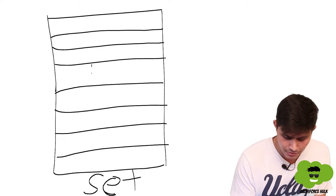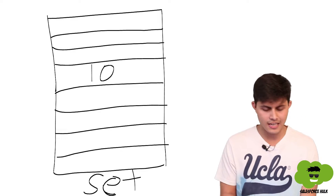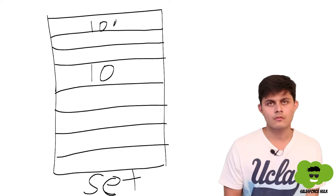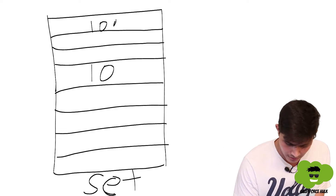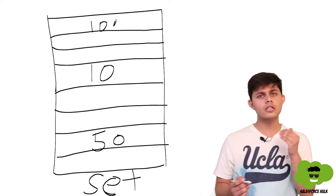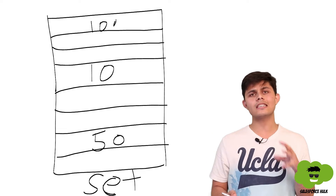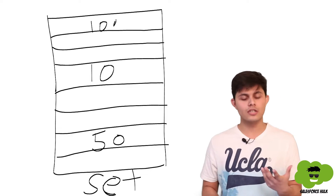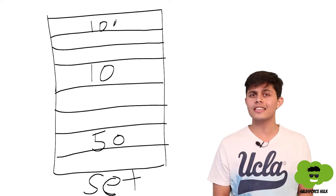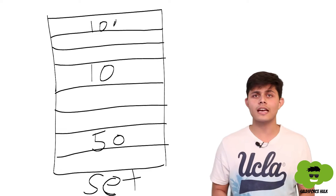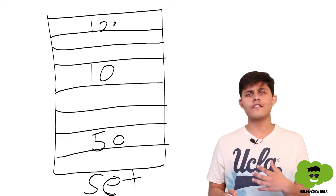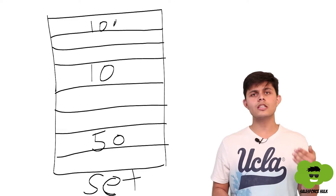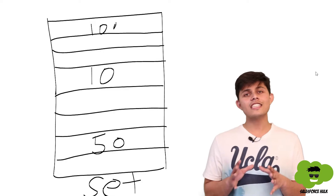If you store 10 into a set, it can be stored anywhere — literally anywhere. Then 100 can be stored somewhere else, and 50 can be stored anywhere too. The information stored in a Set is in an unordered format and is unique. So if you have already stored 50 and you try to store 50 again, that duplicate 50 will not be stored because a Set stores only unique values.